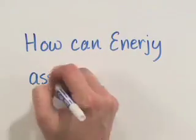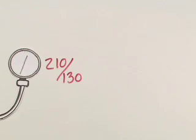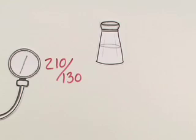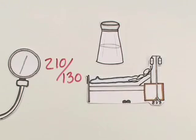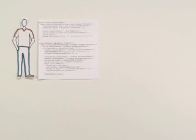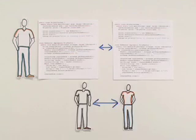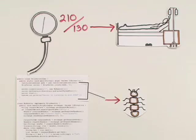You may ask, how can Energy assess my code? Well, like medicine, it's all about using symptoms to predict outcomes. High blood pressure is a symptom of a problem, and if that problem is not addressed, the outcome is predictable because people are alike. Your code, though unique to you, is similar to other Java code in the same way that all humans are alike. And in both cases, symptoms are good predictors of outcomes.